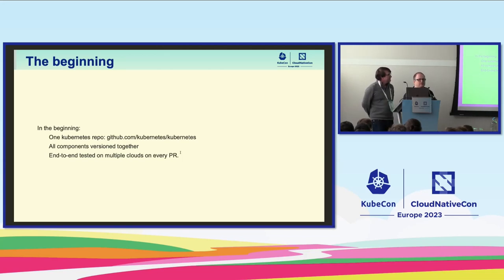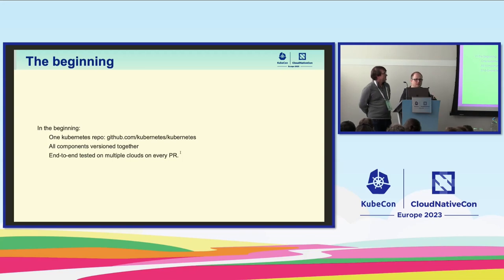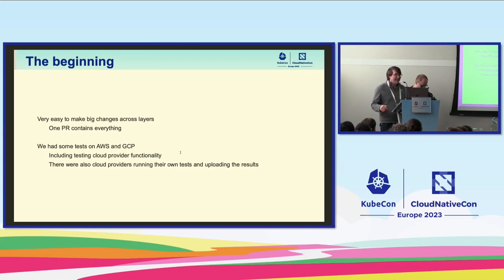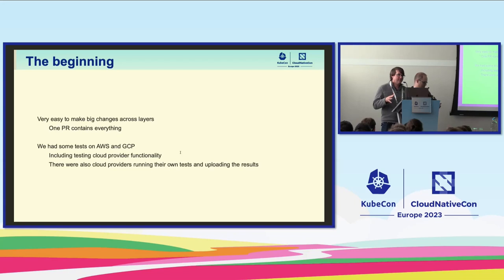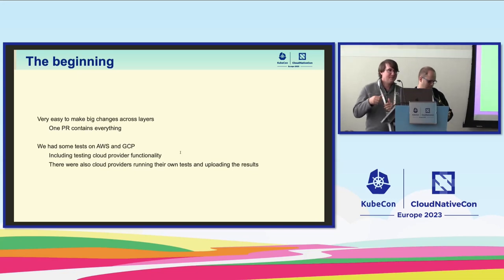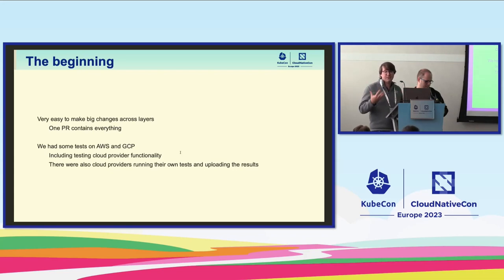In the beginning, there was one big Kubernetes repo, so everything in one place. All components were versioned together — there was no cloud provider or other things separate. And there was end-to-end testing on multiple clouds on every PR. That was actually pretty good. It was the right architecture for the time. It was very easy to make big cross-cutting changes across multiple layers. You could have one PR that could change the API, the kube API server, the controller manager, kubectl, and the scripts that installed Kubernetes — all in one PR.